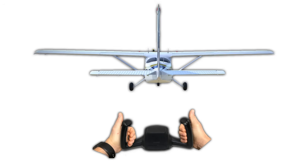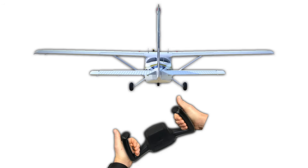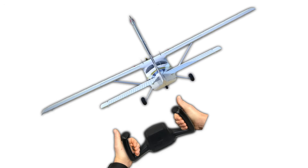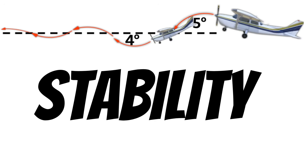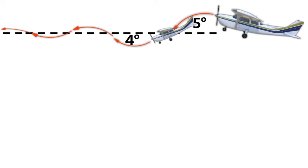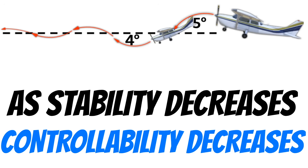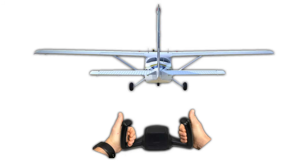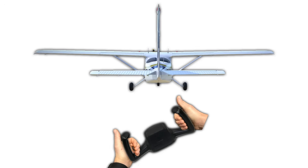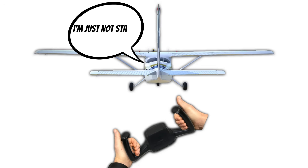Another example would be if I rotated my yoke to the left — an aircraft with good controllability would immediately roll to the left. In the last lesson, we talked about stability, and that's important because stability directly affects the controllability of your airplane. In fact, for most airplanes, when stability decreases, so will your controllability. This means that if you want your airplane to do what you tell it when you move the controls, the airplane must be stable.